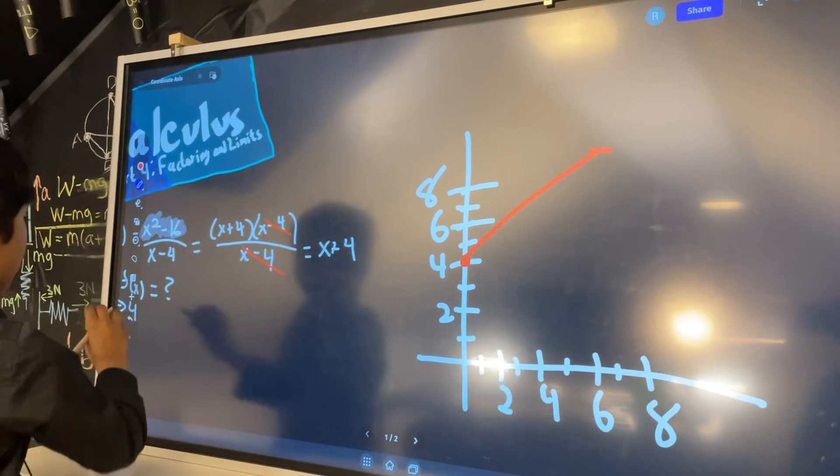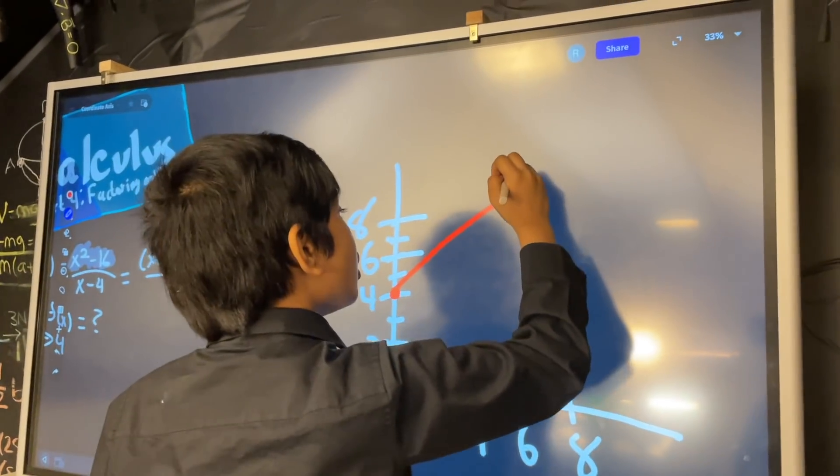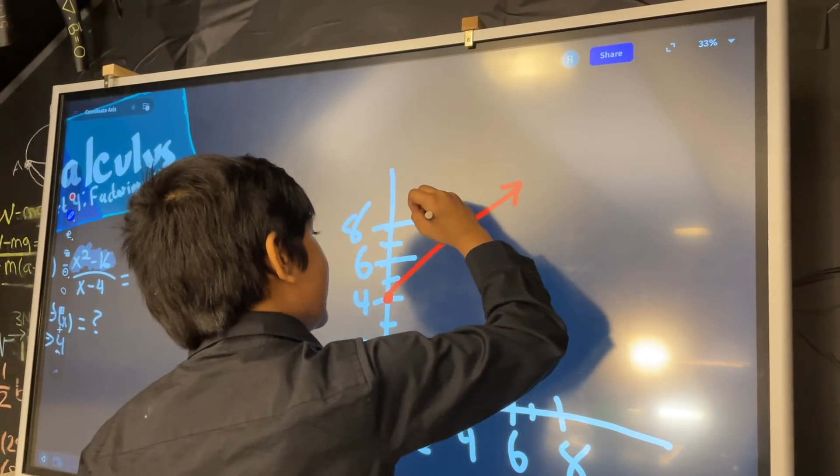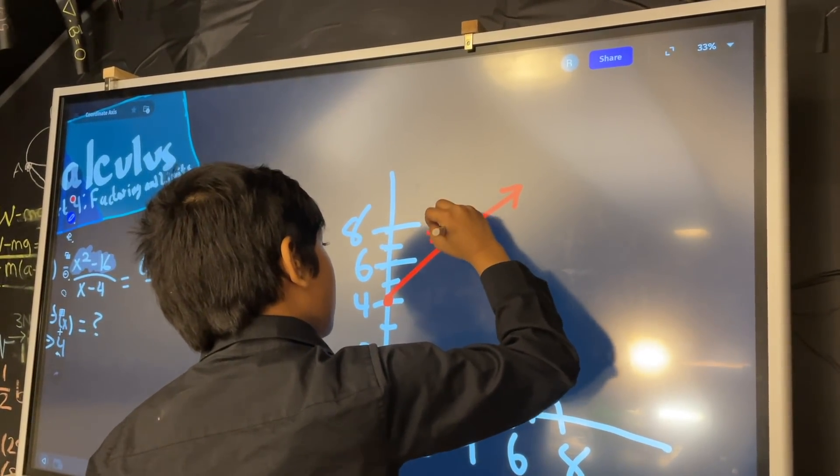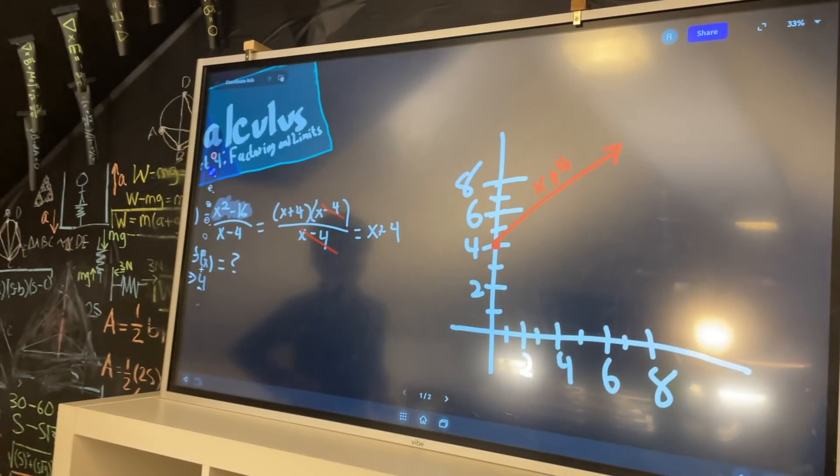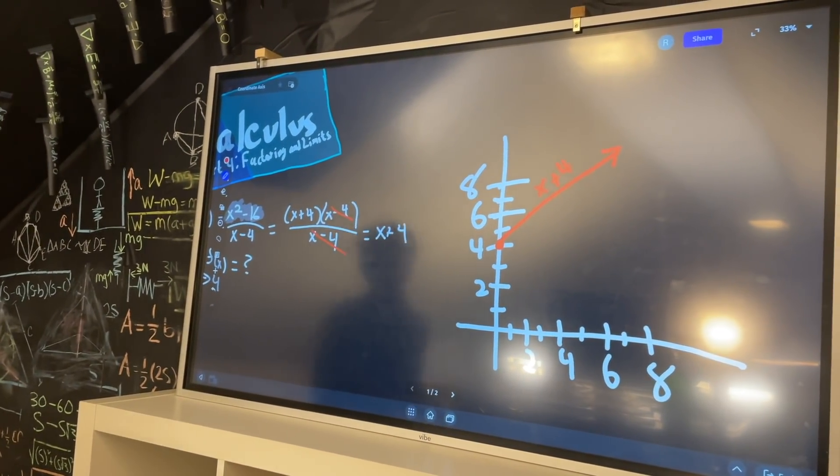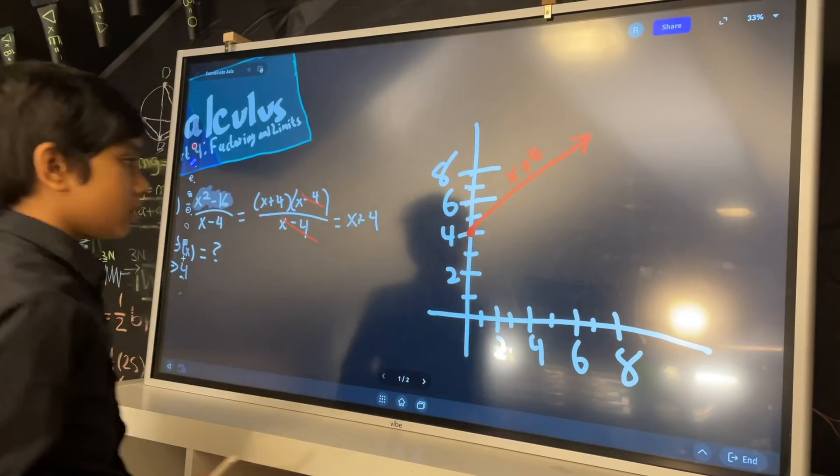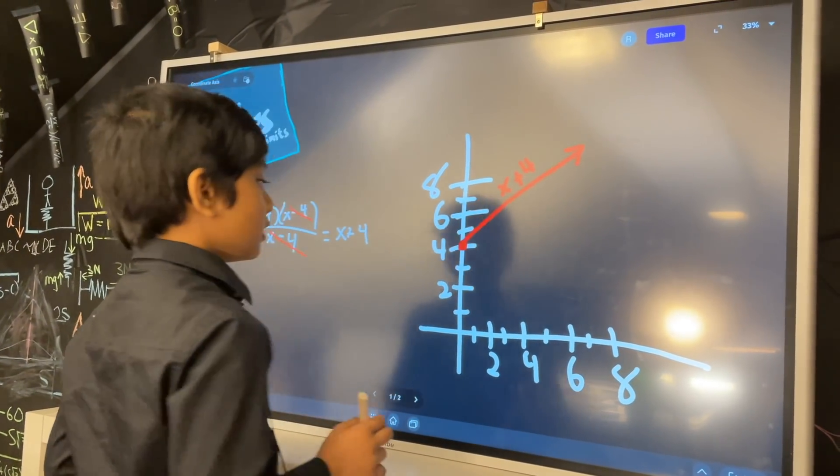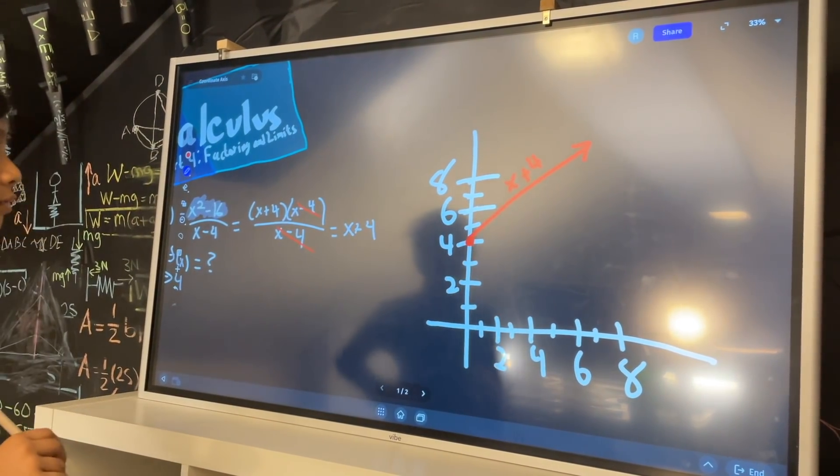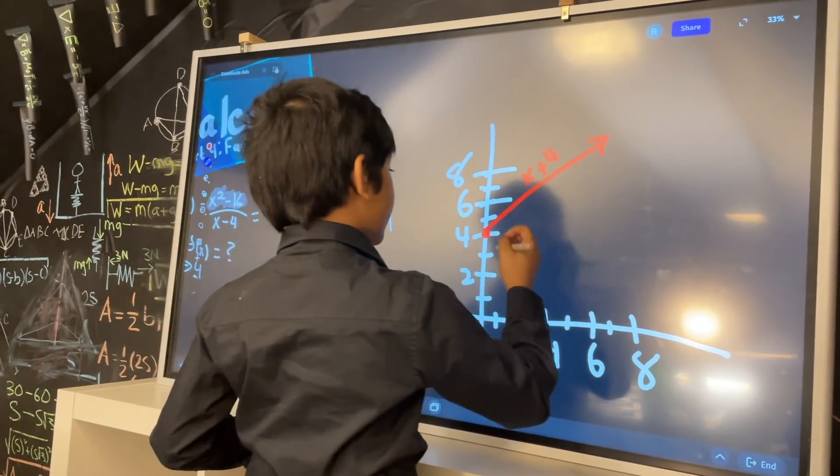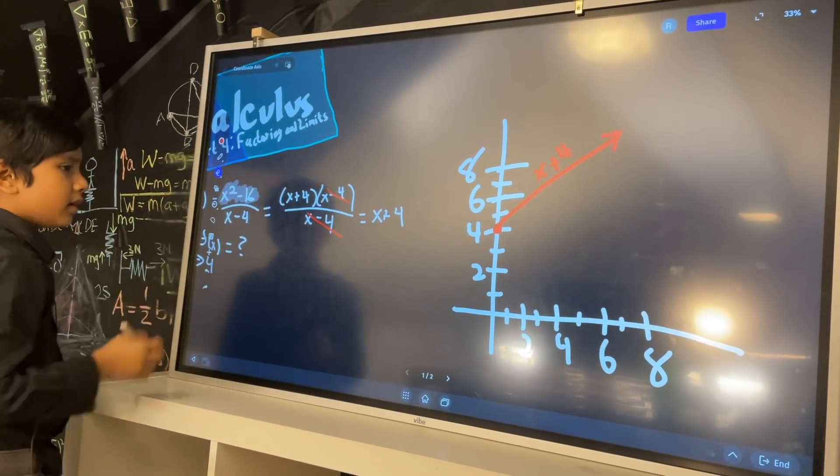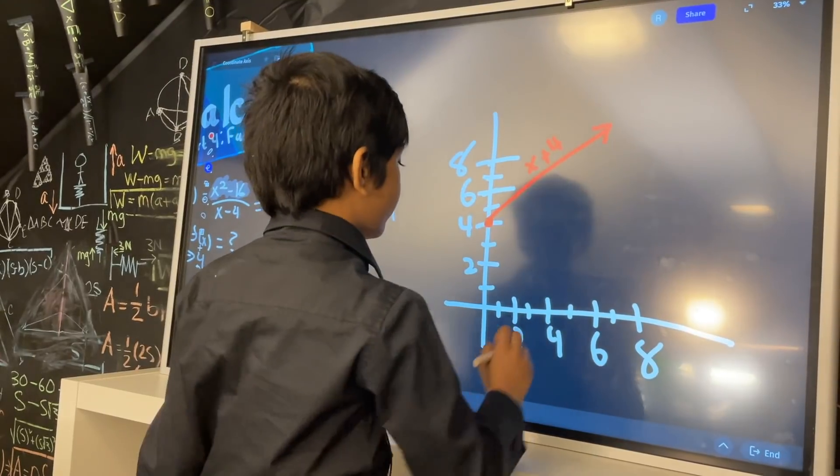So it would look almost virtually the same as x plus 4. It would look nearly virtually the same as x plus 4. But the only difference is what happens when we do this and we try to get the y coordinate when the x coordinate is 4.